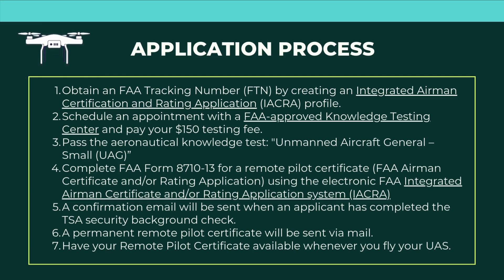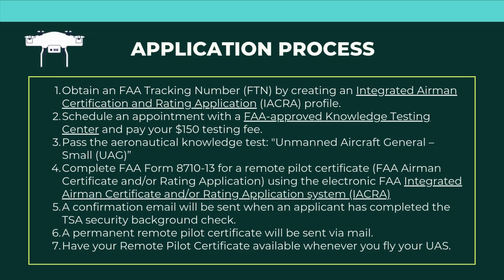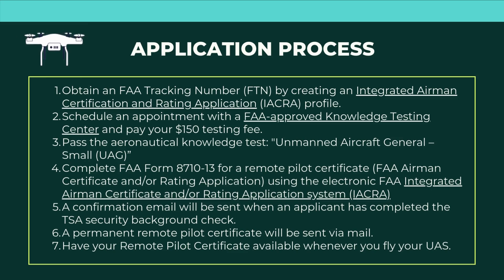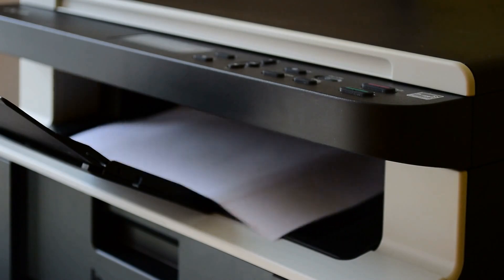You'll go to your scheduled appointment and take and pass the Unmanned Aircraft General Small UAG exam. Once you've passed, you'll complete FAA Form 8710-13 for a remote pilot certificate using the FAA's Integrated Airman Certificate and Rating Application system. A confirmation email will be sent once your TSA security background check is complete, and that email will provide instructions for how to print a copy of your temporary remote pilot certificate.